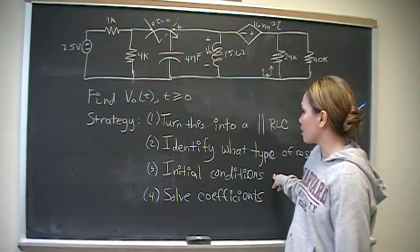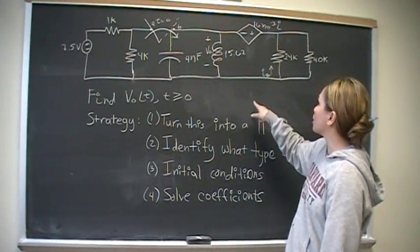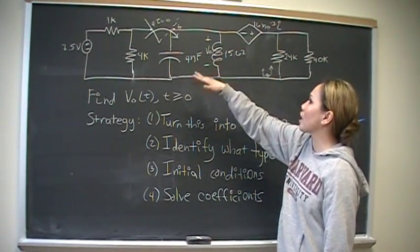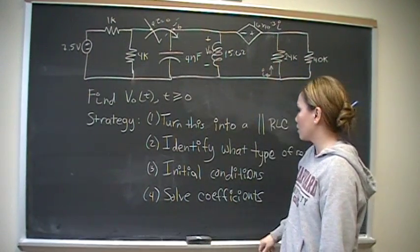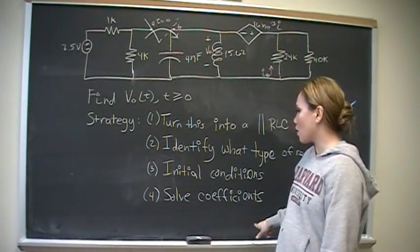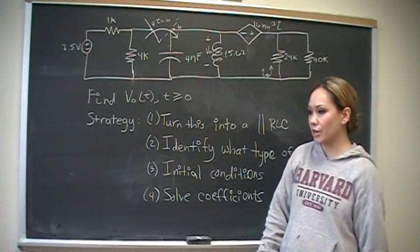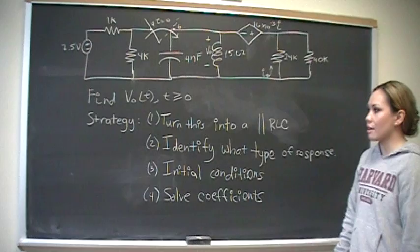So initial conditions, and we need to solve final conditions, like as time approaches infinity, how much current and how much voltage will be left. And then we'll solve for the coefficients of our general equation. So that is the strategy.